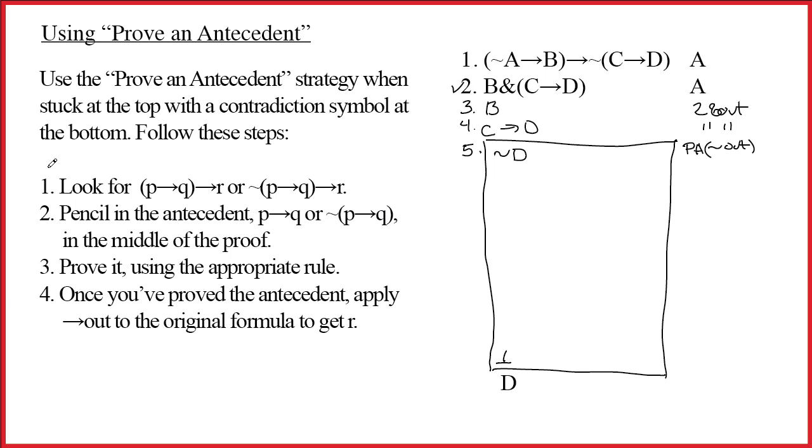Let's now talk about the steps of the strategy. When you're in this situation, the first thing you should do is look for a formula of the form P arrow Q arrow R or tilde P arrow Q arrow R. It's something that has an arrow as its main connective and also has an arrow in its antecedent. Do we have such a line? Line 1, what's the main connective? An arrow. And what is the main connective of the antecedent? It's also an arrow. So line 1 is an instance of these things.